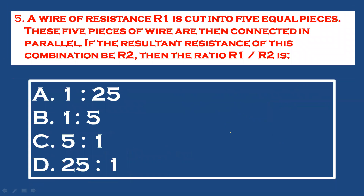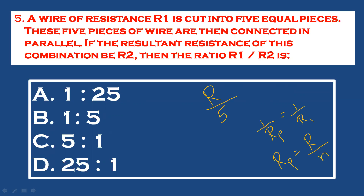Question 5: A wire of resistance R1 is cut into five equal pieces. These five pieces are then connected in parallel. Each piece has resistance R/5. For equal resistors in parallel, the formula is Rp = R/N. So resistance is R/5 divided by 5 resistors, giving Rp = R/25. If the resultant resistance of this combination is R2,